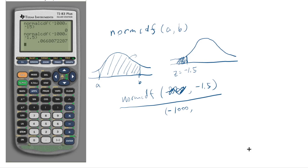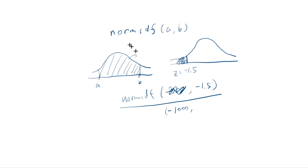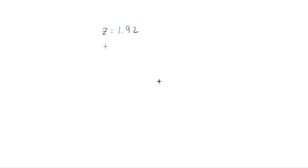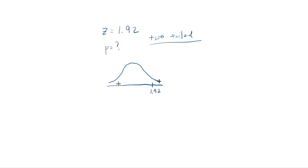Another thing you'd like to know is what to do if you have the p-value of a two-tailed test. Suppose z equals 1.92 and they're asking for the p-value for a two-tailed test. That means you have 1.92 and negative 1.92, and you need both tail areas combined as the p-value. So you just add those two probabilities together, or you can double the left side. Let me calculate each area and add them together.